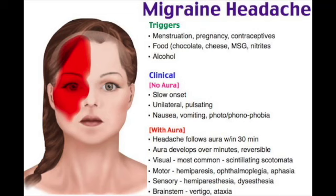Migraine headache is more common in women and family history is positive 80% of the time. Two major types: migraines without aura (most common) and migraines with aura (classic, rarer). Clinical manifestations are usually lateralized, pulsatile, throbbing headache often associated with nausea, vomiting, photophobia, and phonophobia, typically 4 to 72 hours in duration, moderate to severe intensity. Worsened by routine physical activity, stress, lack of sleep or excess sleep, alcohol, specific foods like chocolate and red wine, hormonal contraception, menstruation, and dehydration.